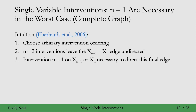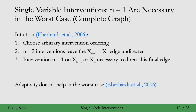We've been considering intervention schemes where we specify all interventions at once in advance — first intervening on this variable, then this one, and so on, for n minus 1 variables. Maybe it would help to do this adaptively: do one intervention, look at the results, then choose the next intervention based on those results. It turns out that adaptivity doesn't help in the worst case — you still need n minus 1 interventions.